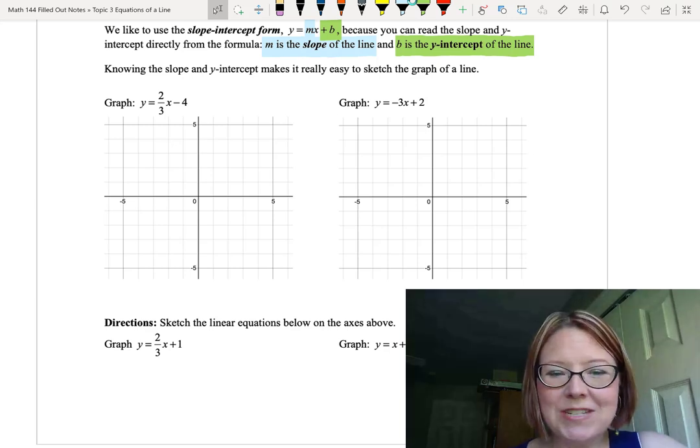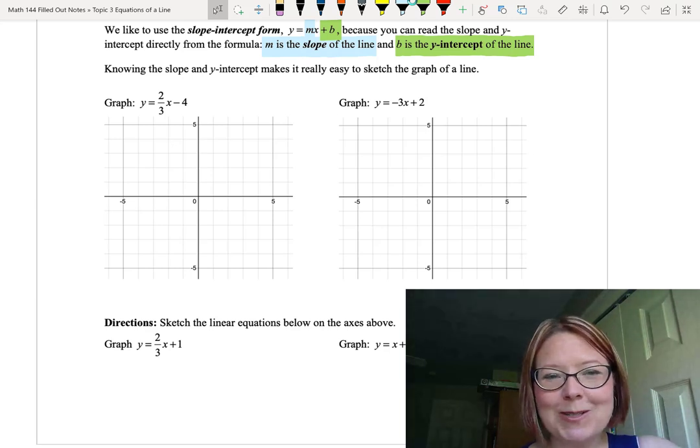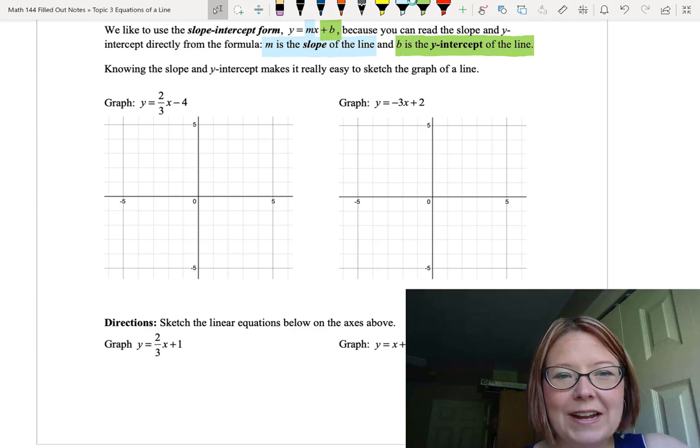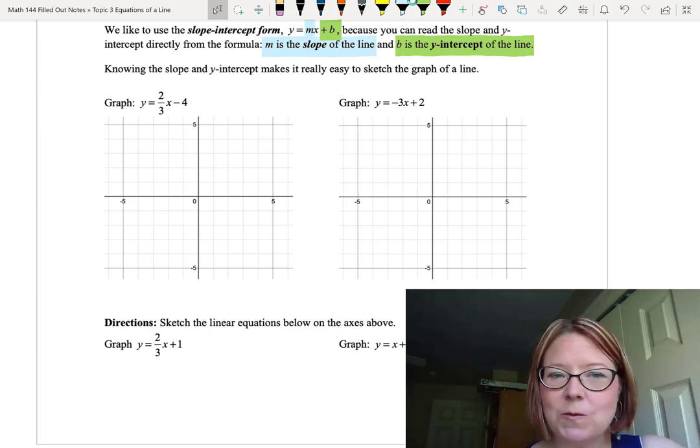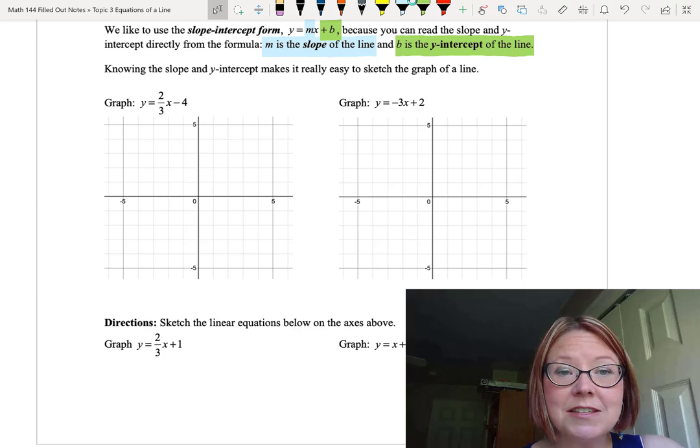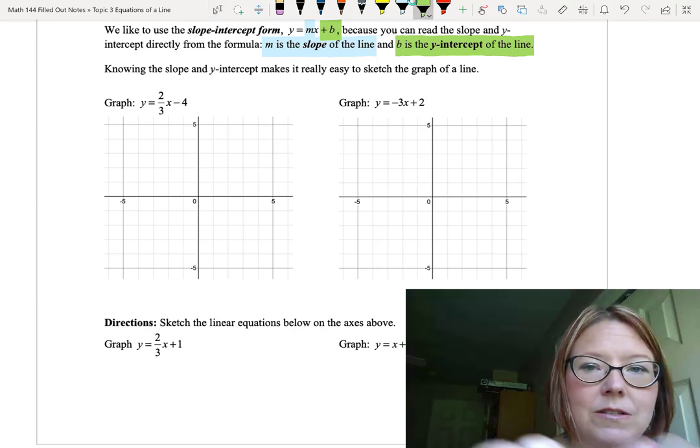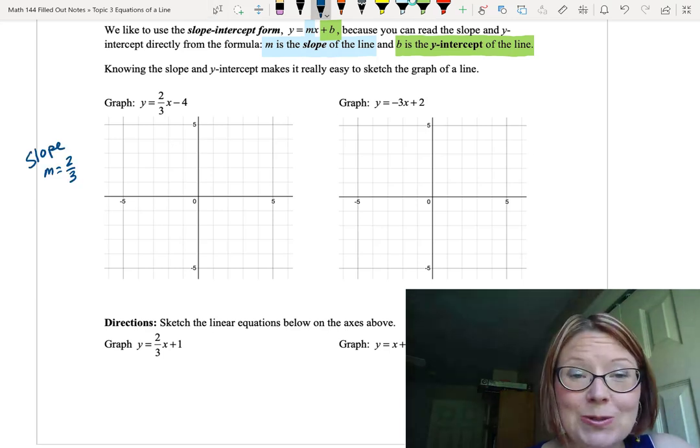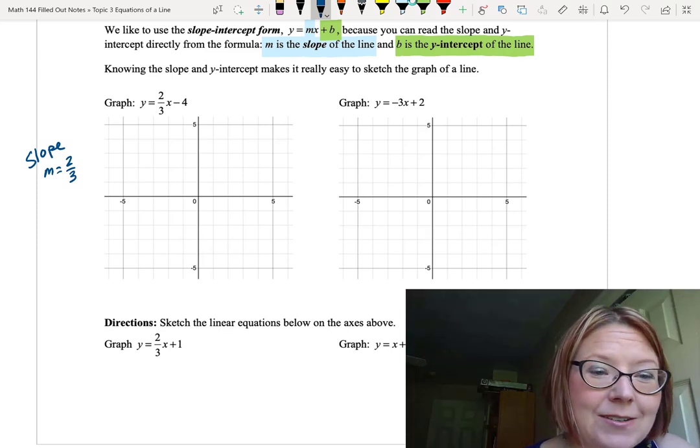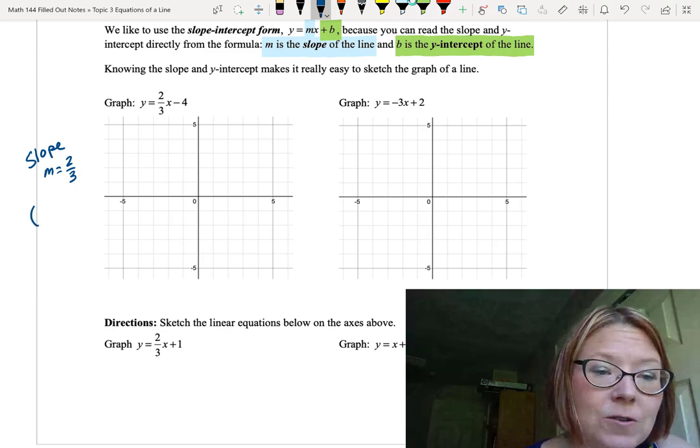Let's try two together, and then I'll give you two to try by yourself. y equals 2 thirds x minus 4. Let's first identify the slope and the y-intercept of that equation. The slope is 2 thirds, so m is 2 thirds. The y-intercept is negative 4, so that's 0 comma negative 4.